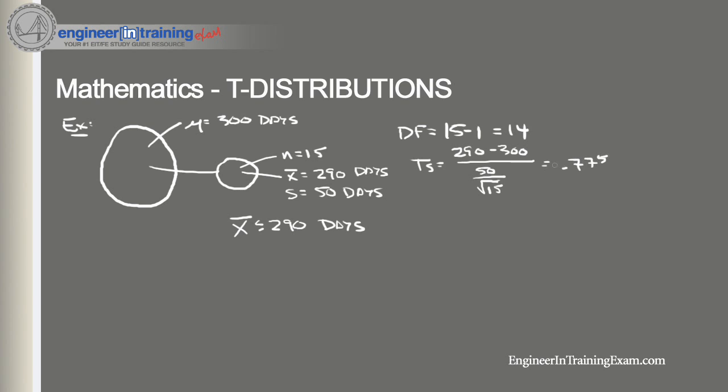And that comes out negative, but due to symmetry, we can ignore that negative. So 0.775. So now we take that back to the t-distribution tables. We want to go down the first column until we find the 14 that represents our degrees of freedom in our sample. And then we just go horizontally until we find 0.775. And that's our t-score. Now we need to go straight up to our tail probability, which is approximately 0.22.